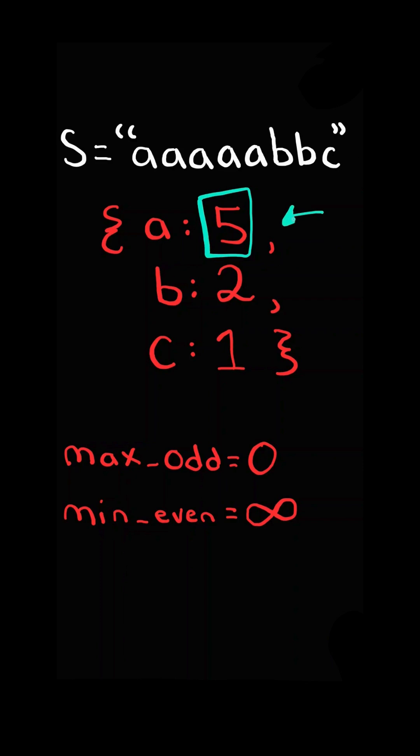If the frequency is odd and greater than max odd, then we update max odd. If the frequency is even and less than min even, then we update min even.